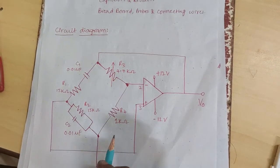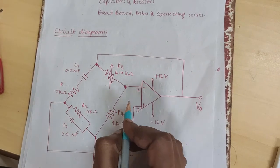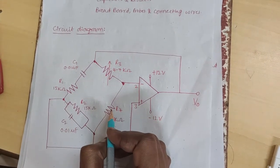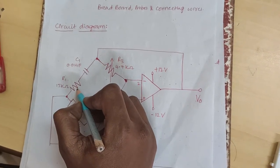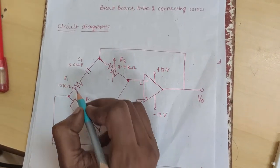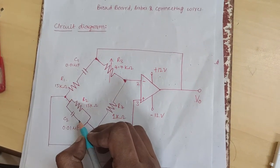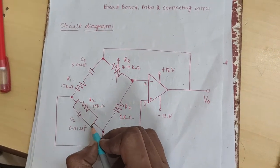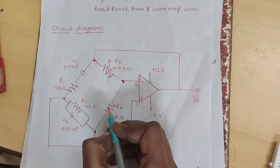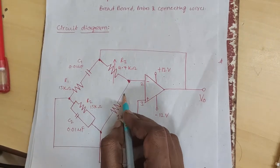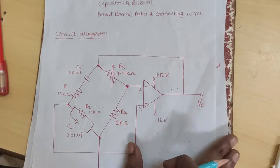The circuit can be viewed as a Wien bridge with a series combination of R1 and C1 in one arm and parallel combination of R2 and C2 in the adjoining arm. These are resistors R3 and R4 connected in the remaining two arms.